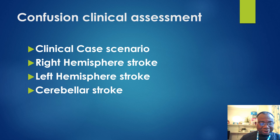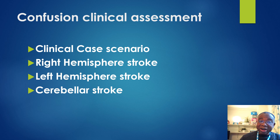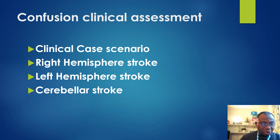Left-sided neglect causes the survivor of a right hemisphere stroke to forget or ignore objects or people on their left side. Finally, some survivors of right hemisphere strokes will experience problems with short-term memory. During cognitive function assessment, it is important to identify signs of past stroke and any recent vascular event.